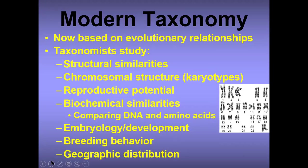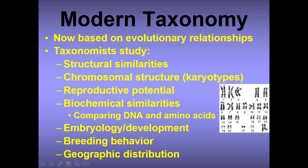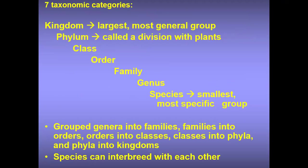So modern taxonomy. Based on evolutionary relationships, taxonomy studies structural similarities, chromosomal structure, reproductive potential, biochemical similarities — comparing DNA and amino acids — as well as embryological development, breeding behavior, and geographic distribution. These are some of the things that modern taxonomists study.